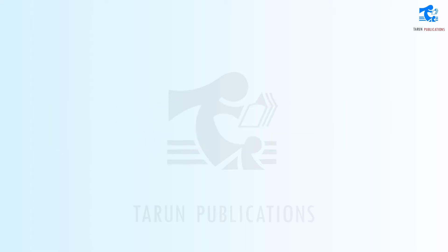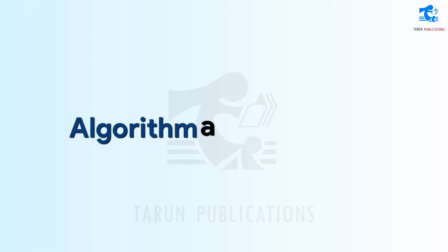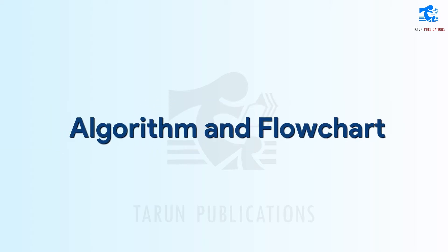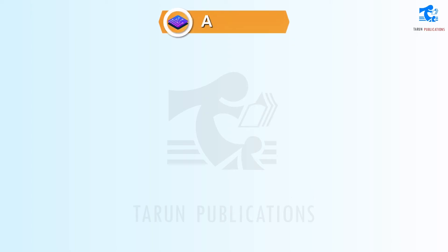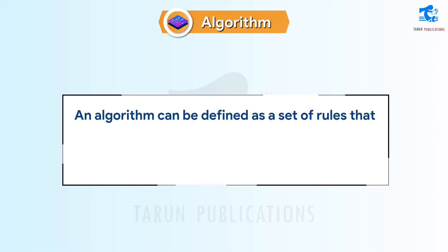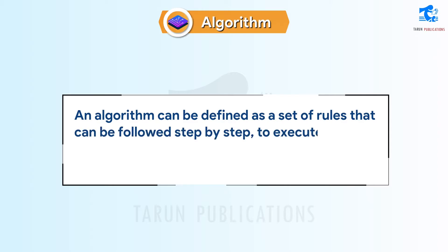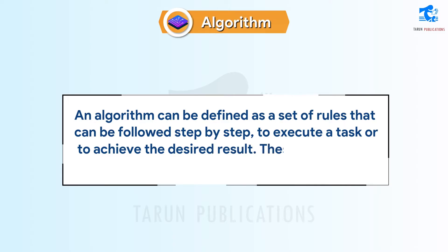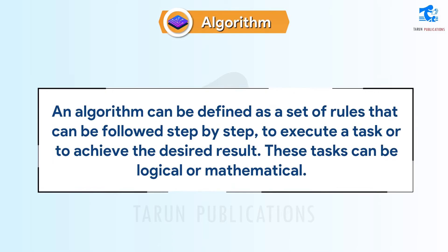Chapter 7: Algorithm and Flowchart. An algorithm can be defined as a set of rules that can be followed step by step to execute a task or to achieve the desired result. These tasks can be logical or mathematical.